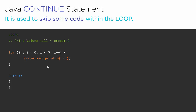In the output console we get 0, 1, 2, 3, 4. But this is not the desired output — we don't want 2 to be printed in the output console. So for that, we have to skip this statement when i is equal to 2.